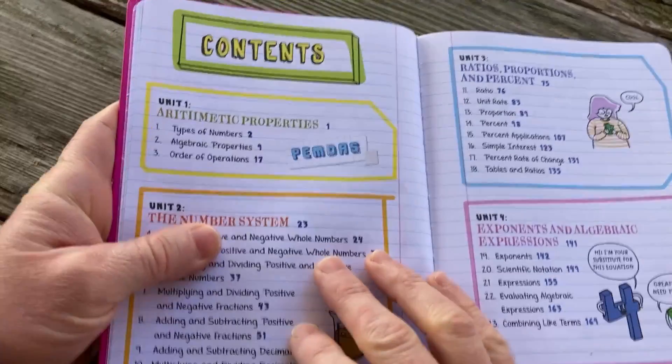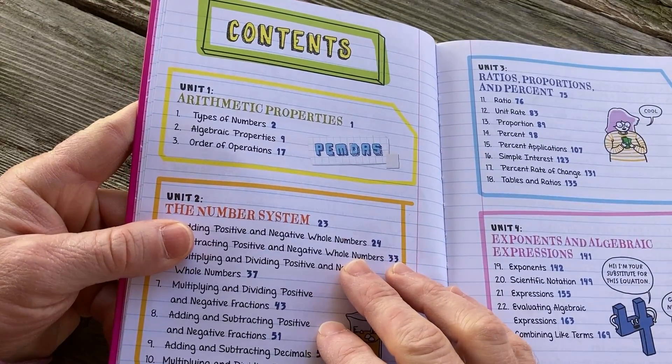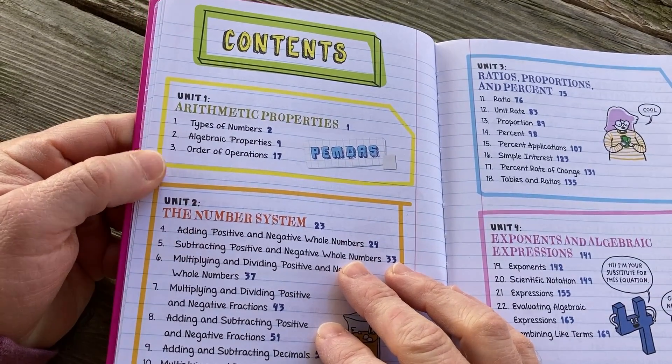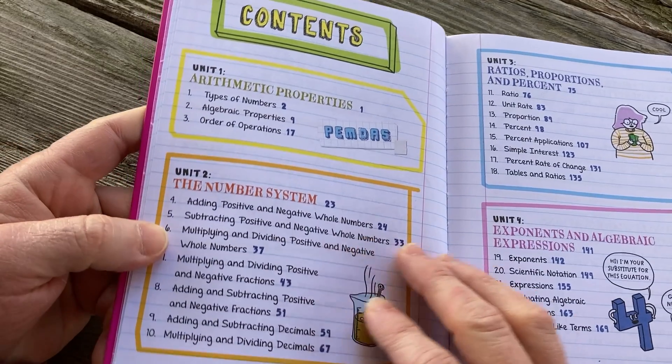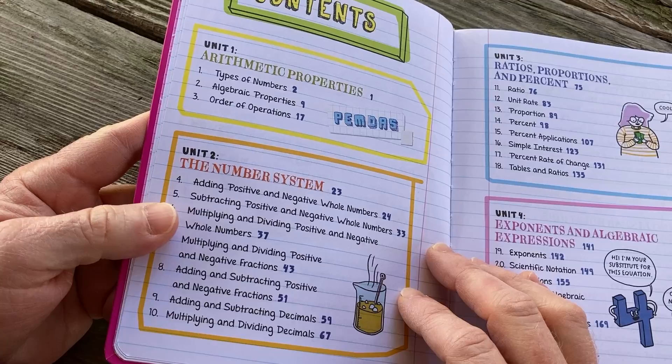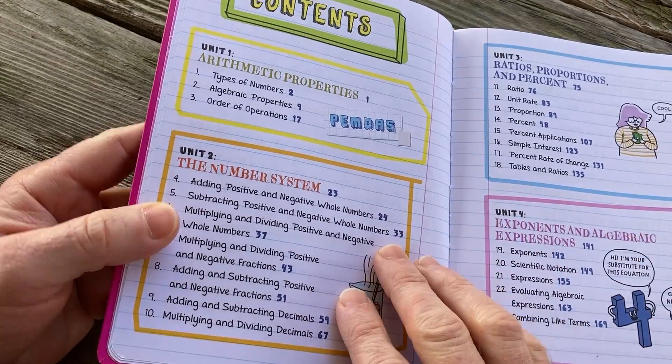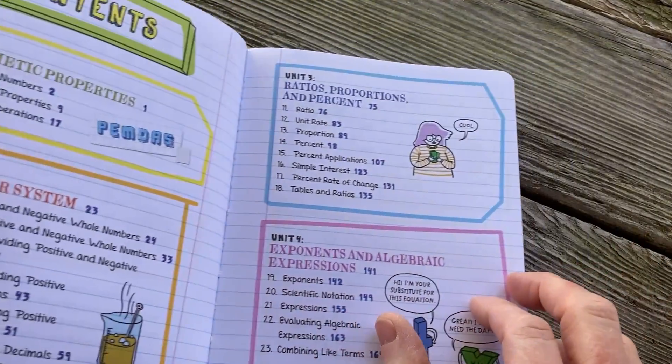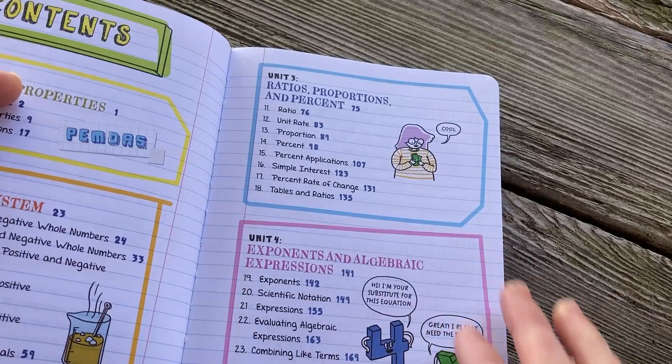So let's look at the contents. Arithmetic properties, the number system, so really basic stuff, pre-algebra. But then it has harder stuff too, as you'll see. Ratios, proportions, and percent.